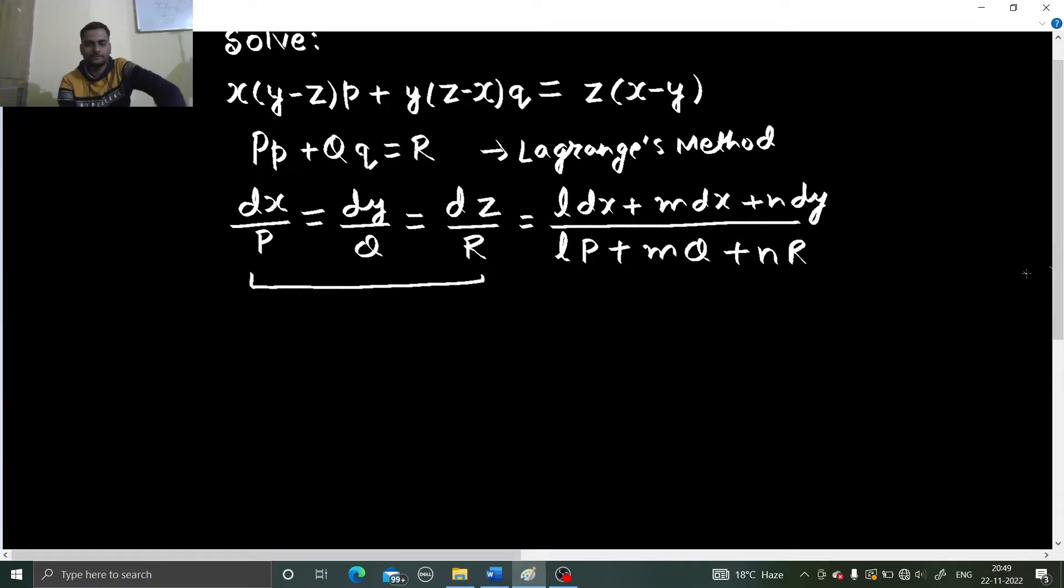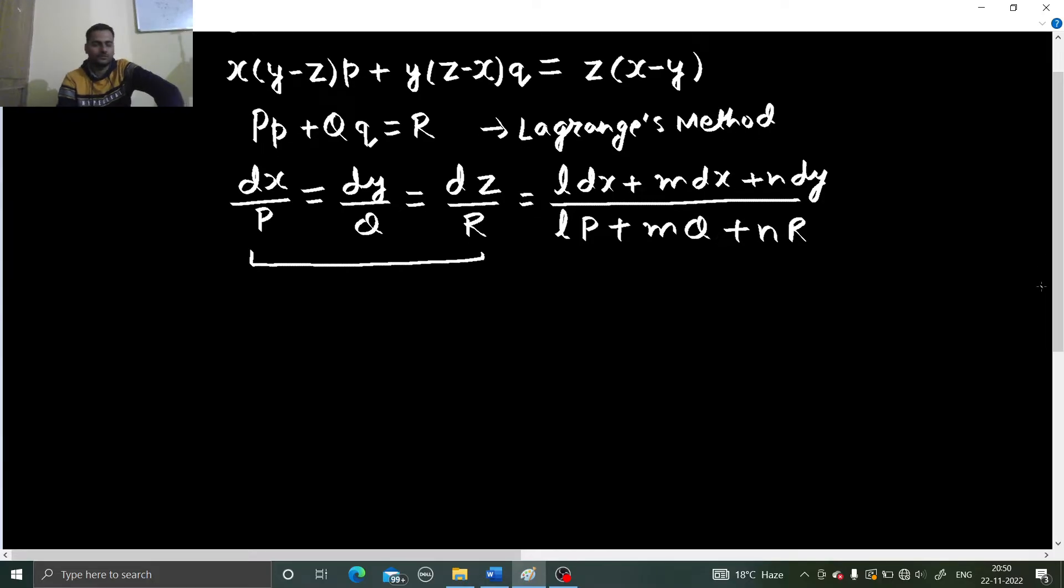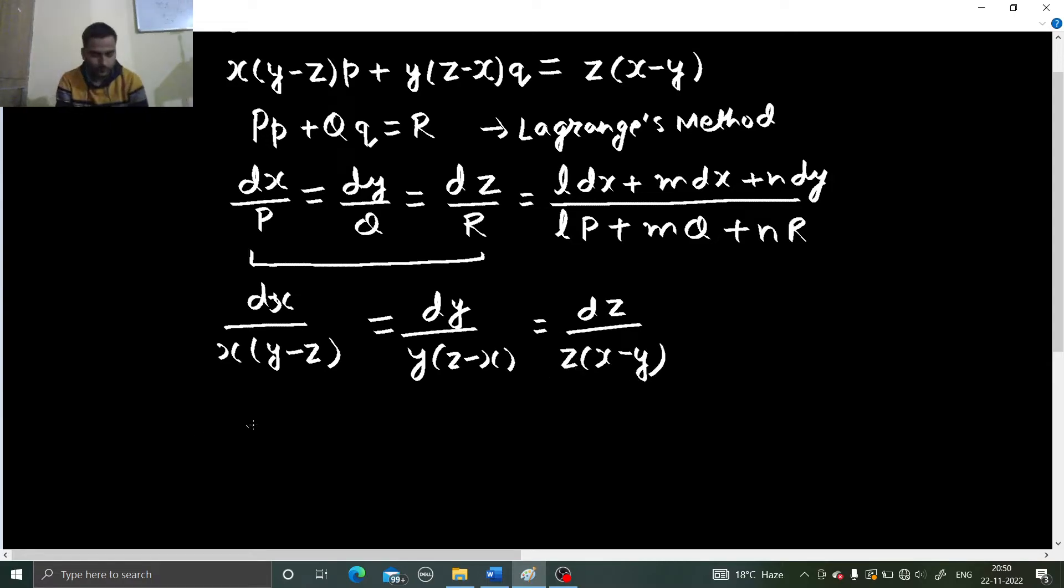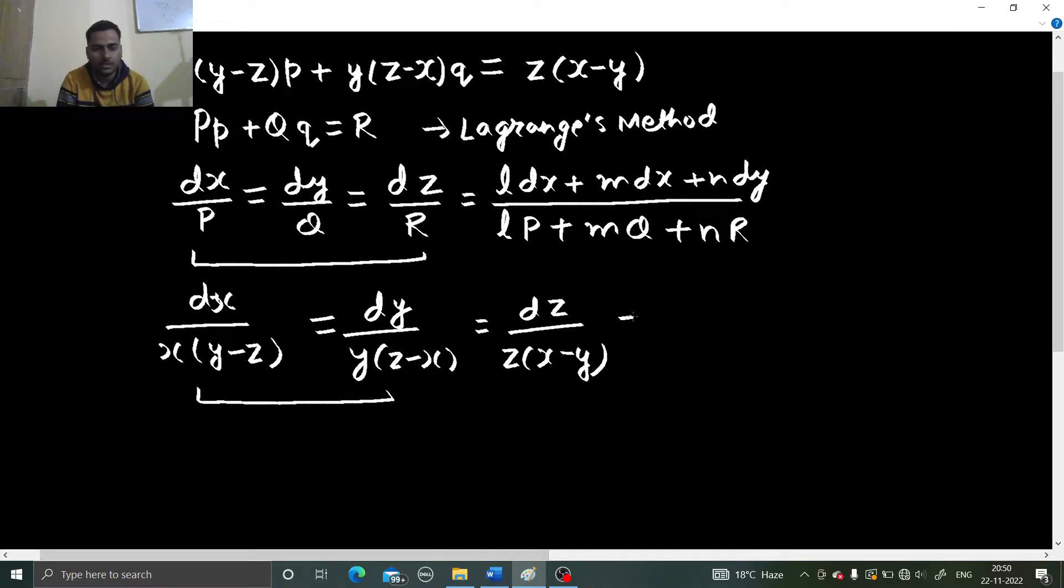So let's move ahead. dx by x(y-z), dy by y(z-x), dz by z(x-y). Now, as you can see, because x, y, z all are there, if you take first two and try to integrate, it will be a problem. So whenever there's a problem, we go for multipliers.